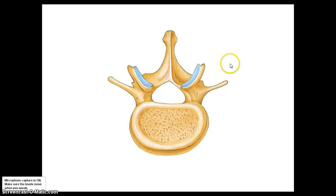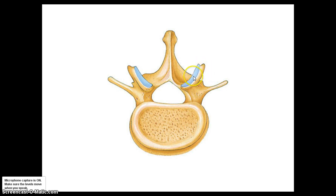Connected onto the vertebral arch are a couple of other parts. The processes that stick out in the transverse direction are called transverse processes — one on each side. There's another process that protrudes posteriorly called the spinous process, which is the part we normally think of as our spine. You can actually feel this through the skin on your dorsal region. We also have articular facets — superior and inferior sets — which form joints between vertebrae.